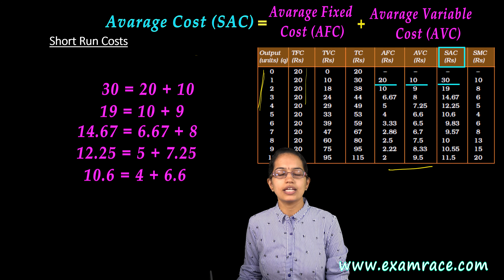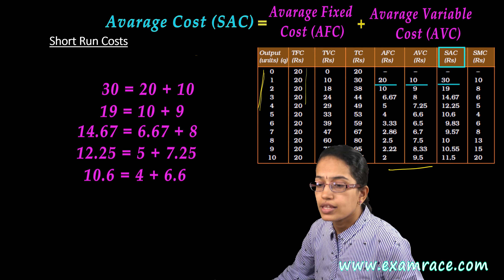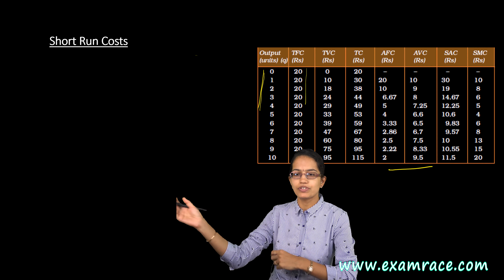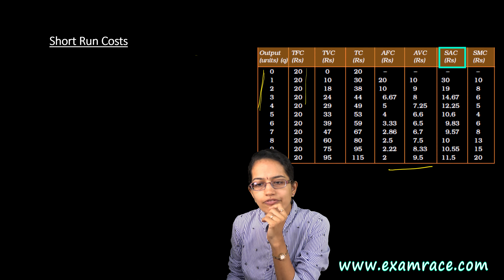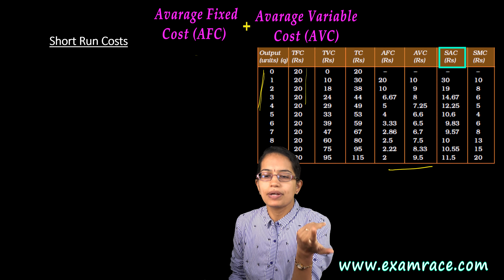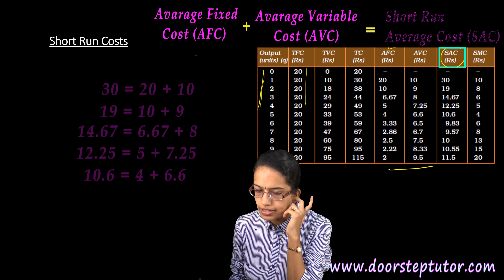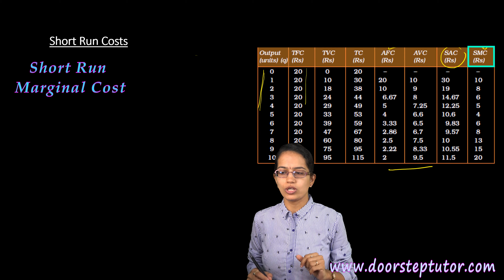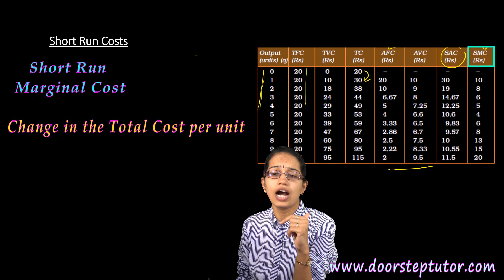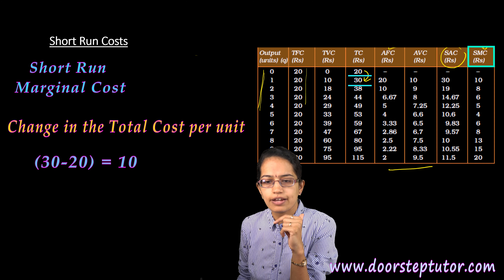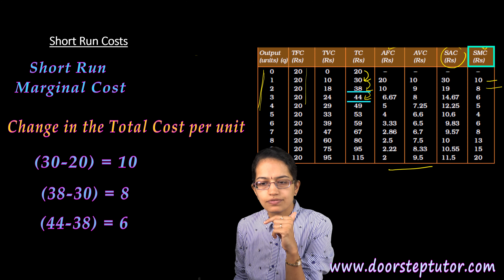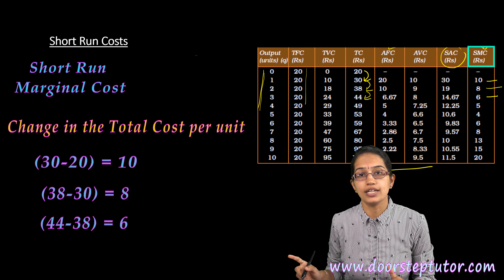Once you have the average fixed cost and average variable cost, you calculate the average cost. The short run average cost is this average cost. You can denote it as average cost or short run average cost — you add both values together to get it. Then there is the short run marginal cost, which is the change in total cost per unit change in output. For example: 20 to 30 gives 10; 30 to 38 gives 8; 38 to 44 gives 6, and so on. That is the short run marginal cost.